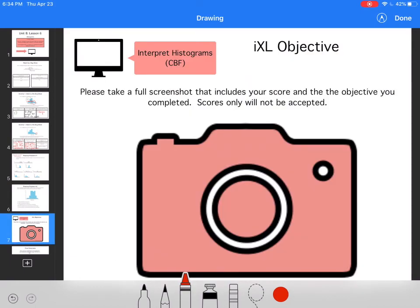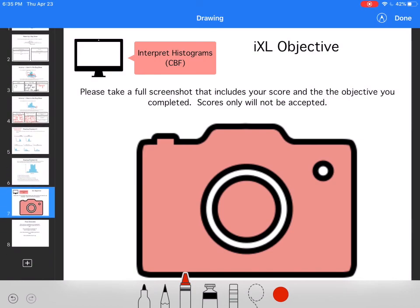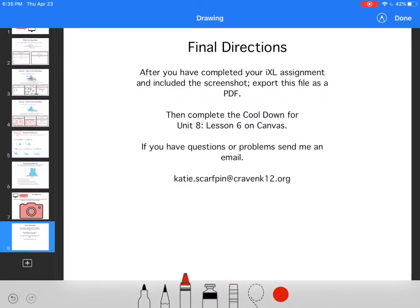For IXL today you're interpreting histograms, so we're doing more with histograms. Take a screenshot for me and then do your cool down for Lesson 6, export it as a PDF, and let me know if you need help.